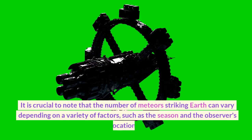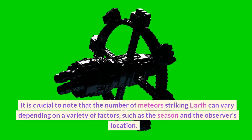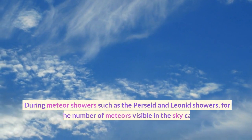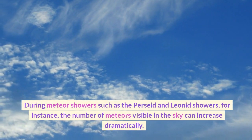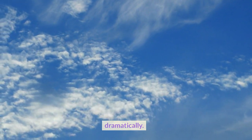It is crucial to note that the number of meteors striking Earth can vary depending on a variety of factors, such as the season and the observer's location. During meteor showers such as the Perseid and Leonid showers, for instance, the number of meteors visible in the sky can increase dramatically.